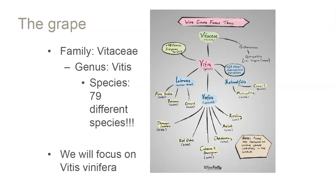Within the genus we have at least 79 different species. We're generally going to be focusing on vinifera, which accounts for the majority of grapes — Riesling, Merlot, Chardonnay, Cabernet Sauvignon. There's vinifera from all over the place; Thompson Seedless is also called Kishmish in the Middle East and probably originated around Iran. There's actually a lot of grape growing in Iran and Afghanistan, mostly for fresh fruit and juices.